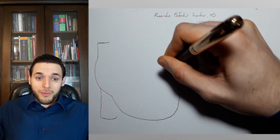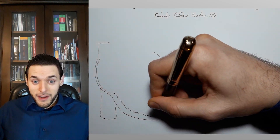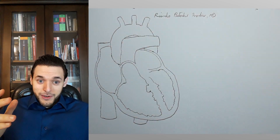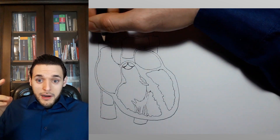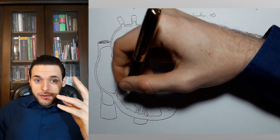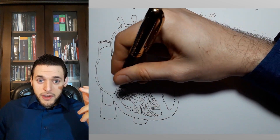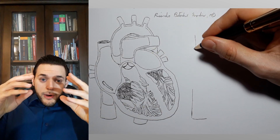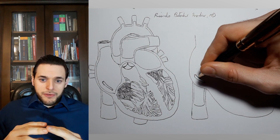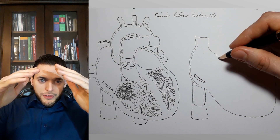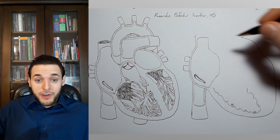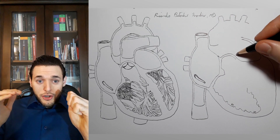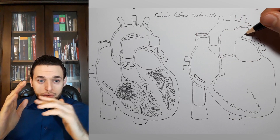The human heart is supposed to be clearly divided between two sides. The right one pumps the deoxygenated venous blood coming from the body towards the lung, whereas the left deals with the oxygenated arterial blood and sends it through the aorta to the systemic circulation. Atrial septal defects, ventricular septal defects, and patent ductus arteriosus are abnormal communications between systemic and pulmonary circulations and allow blood to flow from one side of the heart to the other.